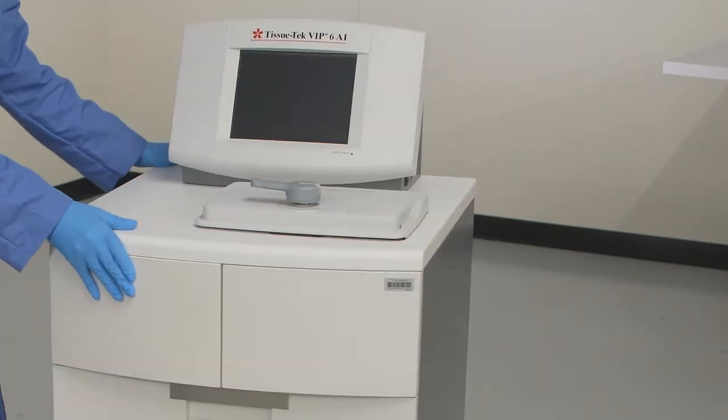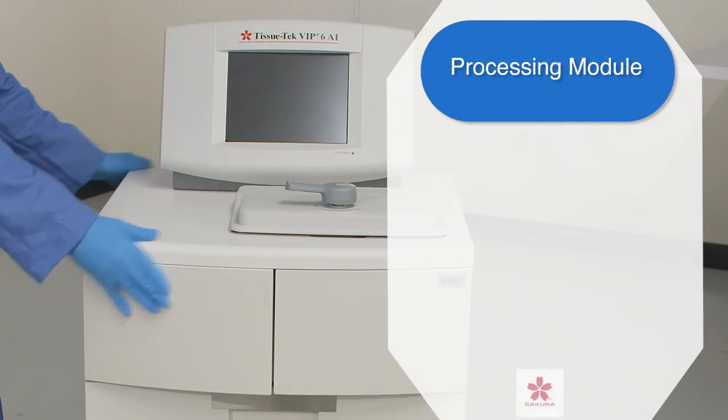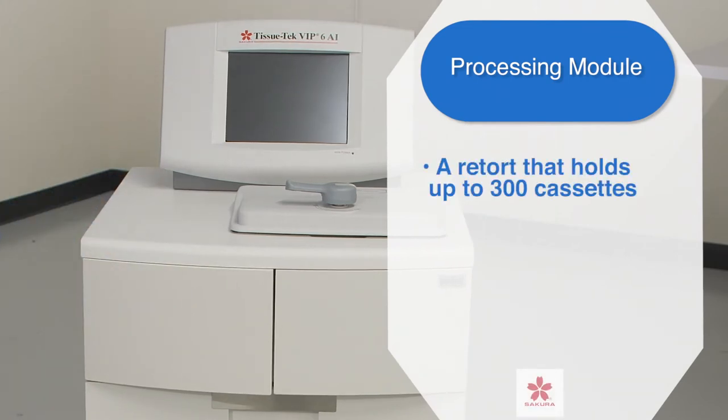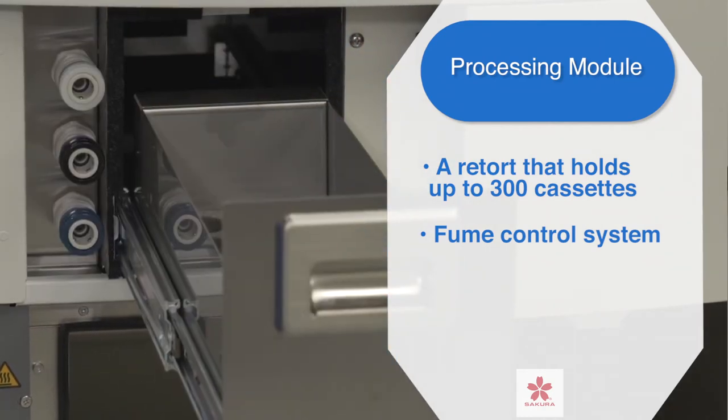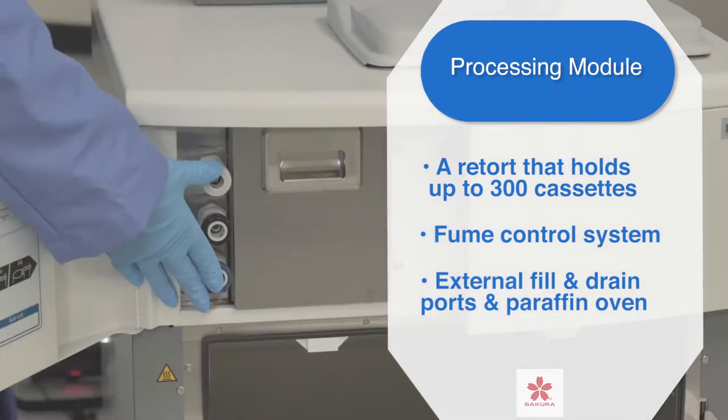The processing module consists of four sections: a retort that holds up to 300 cassettes, the fume control system that is constantly purging fumes from the retort and oven compartment, external fill and drain ports, and the paraffin oven.